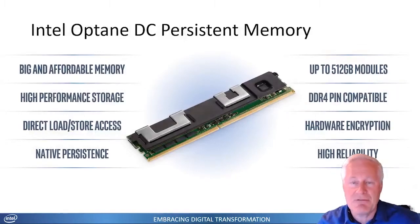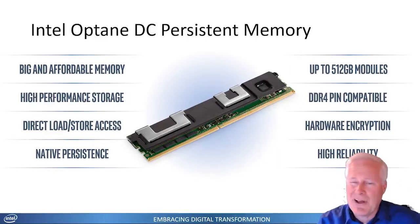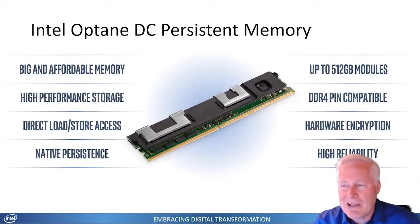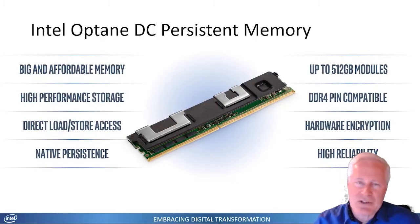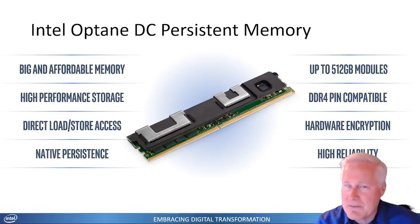Optane DC Persistent Memory is a brand new technology from Intel. It comes in DDR4 format, so it fits right in your server's DDR4 memory slot. These are PEMMs — persistent memory modules — and they come in 128, 256, and 512 gigabyte modules. In a two-socket system, I can have six terabytes of persistent memory. It's hardware encrypted, tied to the CPU, so you don't have to worry about someone stealing a module and accessing your data. High reliability, and I think it's going to be a game changer.